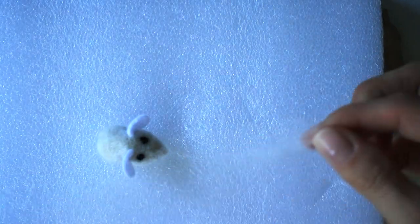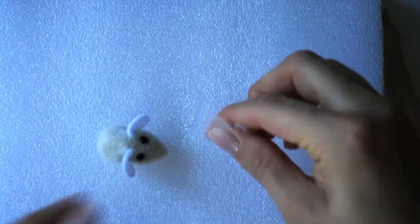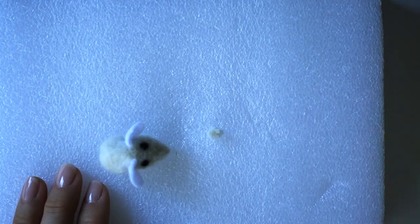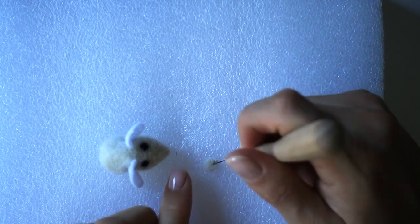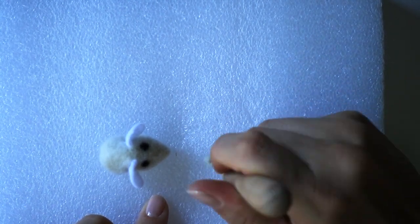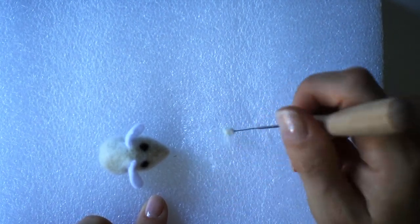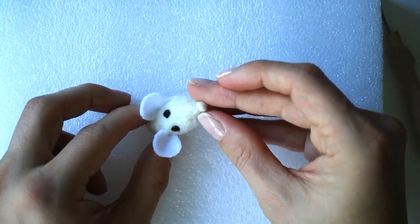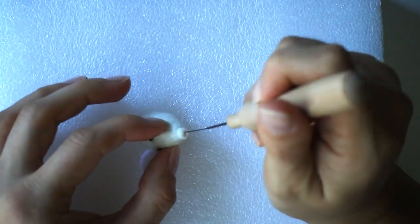For the nose, I'm taking some white wool and creating a small ball. I'm continuing to roll the ball and stabbing it with the needle to make it feel firmer. Carefully, not hurting my fingers, I'm attaching the nose to the head.